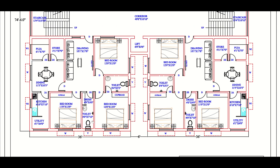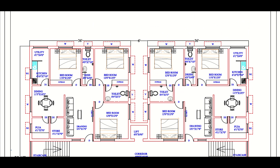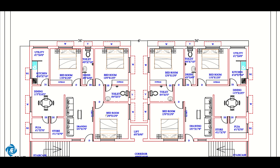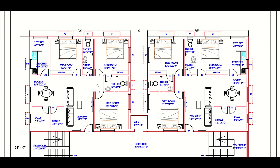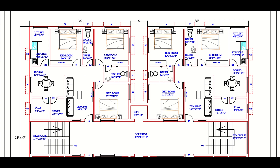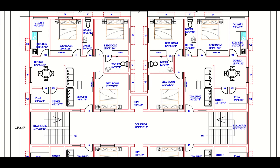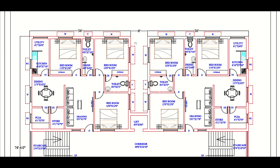One unit contains three BHK — that is, one, two, and three bedrooms, and two toilets: one attached and another common. We also have a dining space, store room, drawing hall, and a kitchen-cum-utility. These are the features of one unit's plan — a comfortable three BHK with good ventilation.